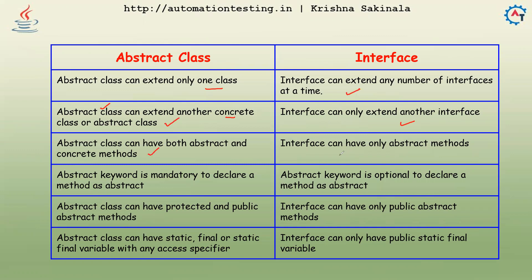An abstract class can have both abstract and concrete methods. An interface can have only abstract methods. Because of that, an interface is a pure abstract class.